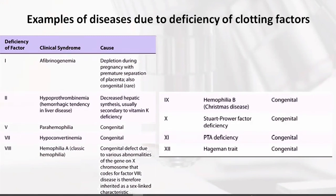Factor 10 is known as the Stuart factor, or Stuart-Prower factor, or thrombokinase. In the absence of the Stuart-Prower factor, this deficiency disorder will form, and it is also a congenital disorder.